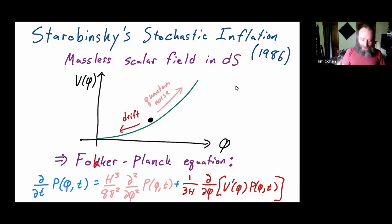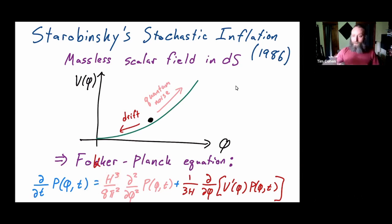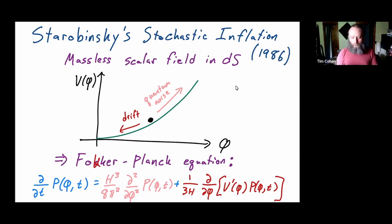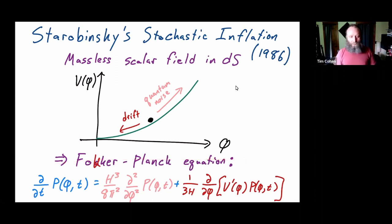Starobinsky argued this naturally leads to a Fokker-Planck equation, which describes the time dependence of the probability distribution of the field phi. It has two terms: the quantum noise manifests as a two-derivative term with respect to phi proportional to Hubble, and there's a drift term depending on the derivative of the potential. This Fokker-Planck equation is even famous to phenomenologists — it's the equation you solve to check the metastability of the Higgs in the standard model. When the Higgs was discovered, the CERN group computed the NNLO Coleman-Weinberg potential and stuck it into this formalism to produce the famous plots showing we live in the metastability region.